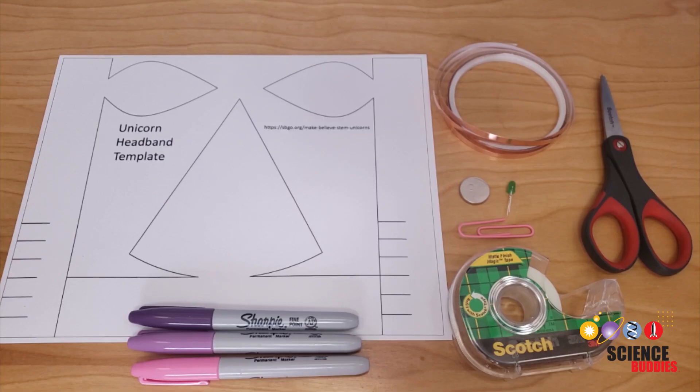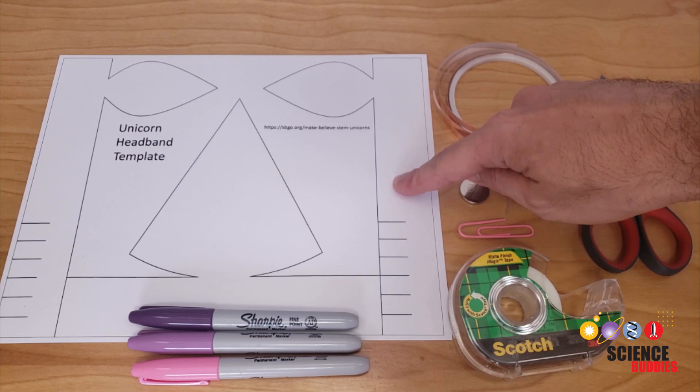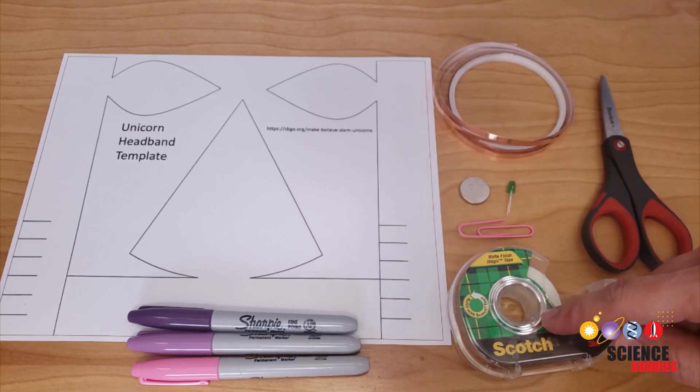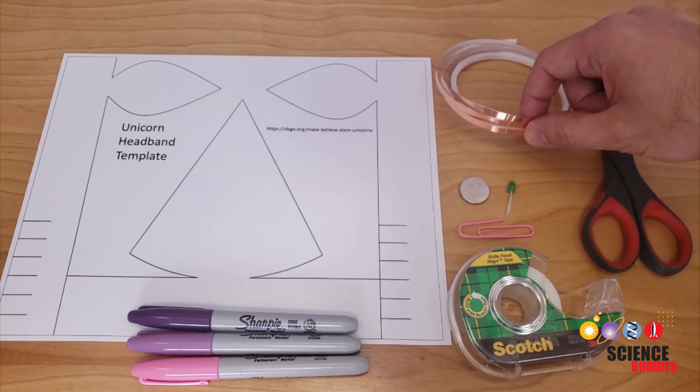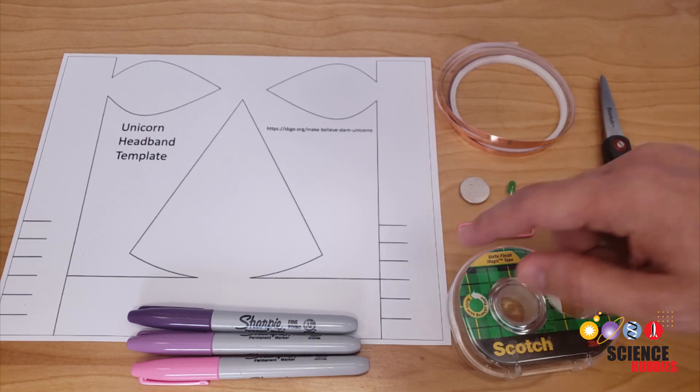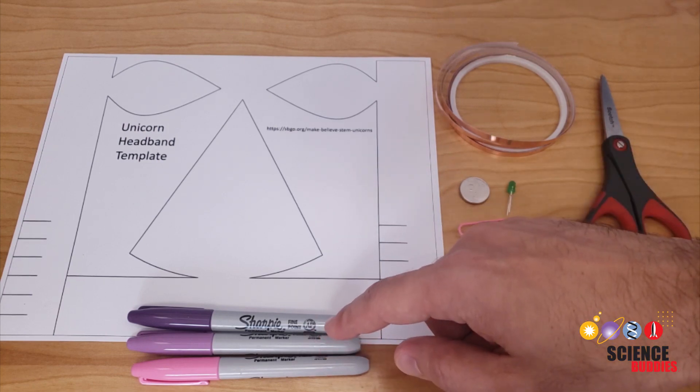To make your headband you will need the printable template, a link for that is available in the description of this video, clear tape, a paper clip, a 2032 coin cell battery, an LED, copper tape although you can also use strips of aluminum foil, scissors, and whatever materials you would like to use to decorate your headband like markers or stickers.